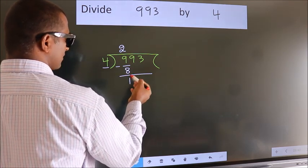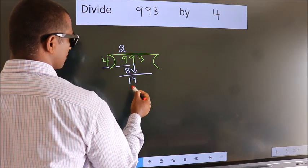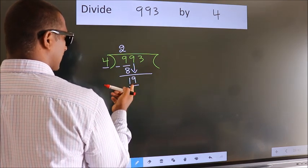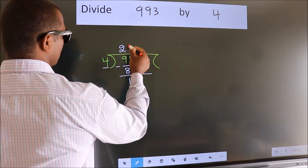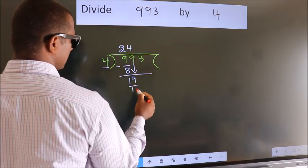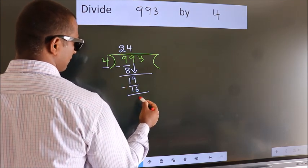After this, bring down the beside number, so 9 down, so 19. A number close to 19 in 4 table is 4 fours, 16. Now we subtract, we get 3.